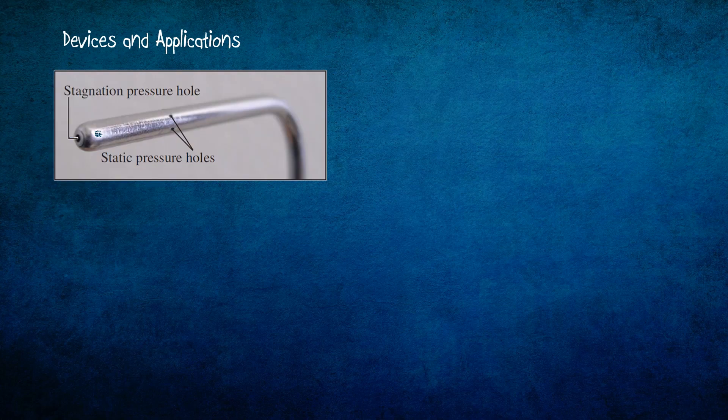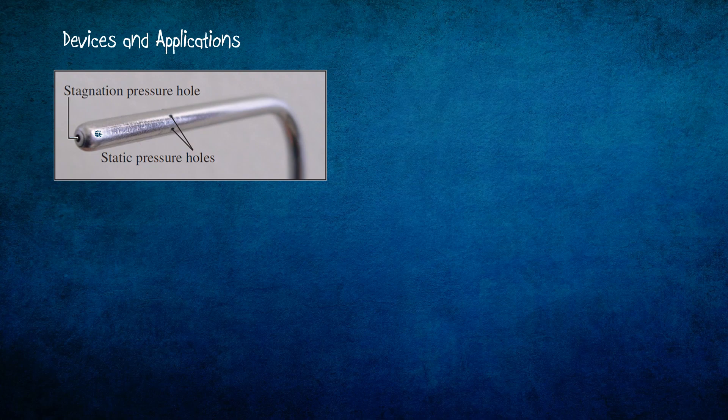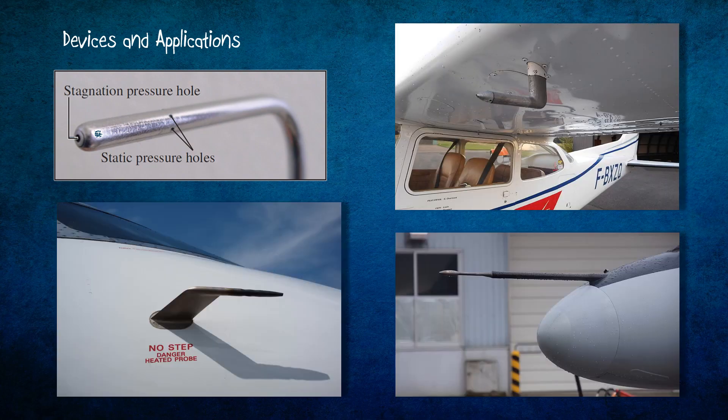The pitot tubes are widely used in aviation to measure the air velocity outside of an aircraft. Here the pitot tube is shown at different locations on an aircraft.